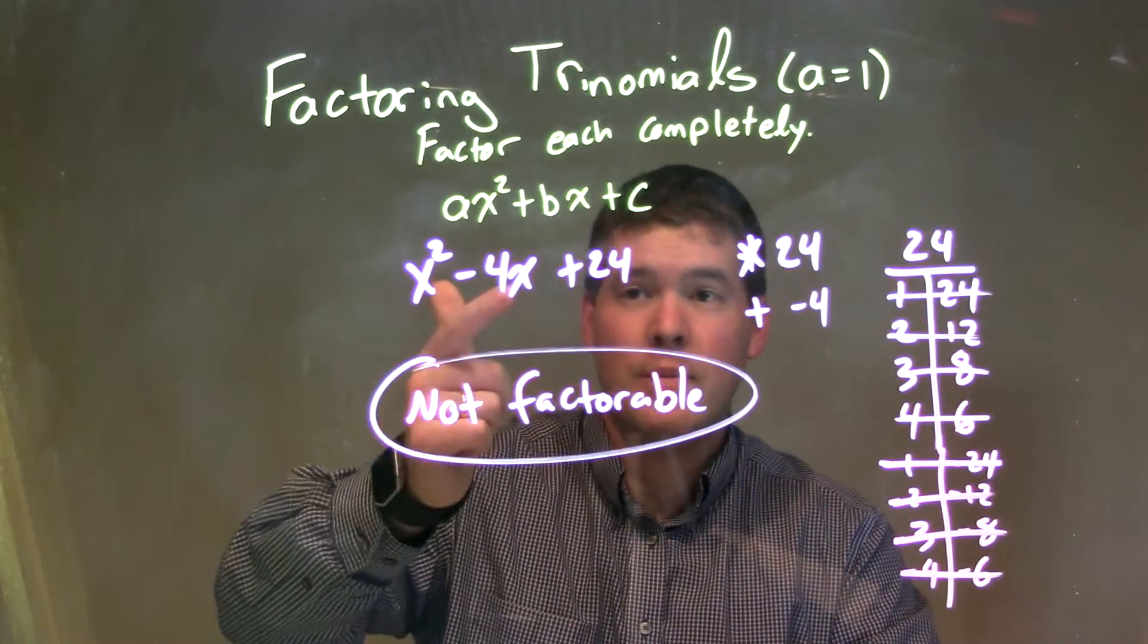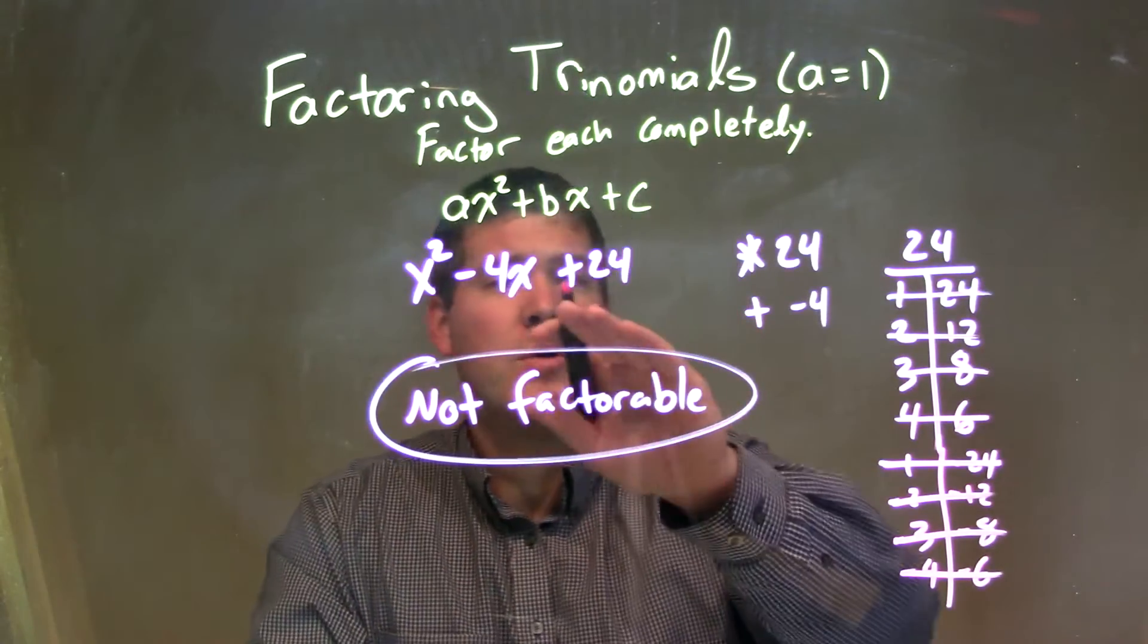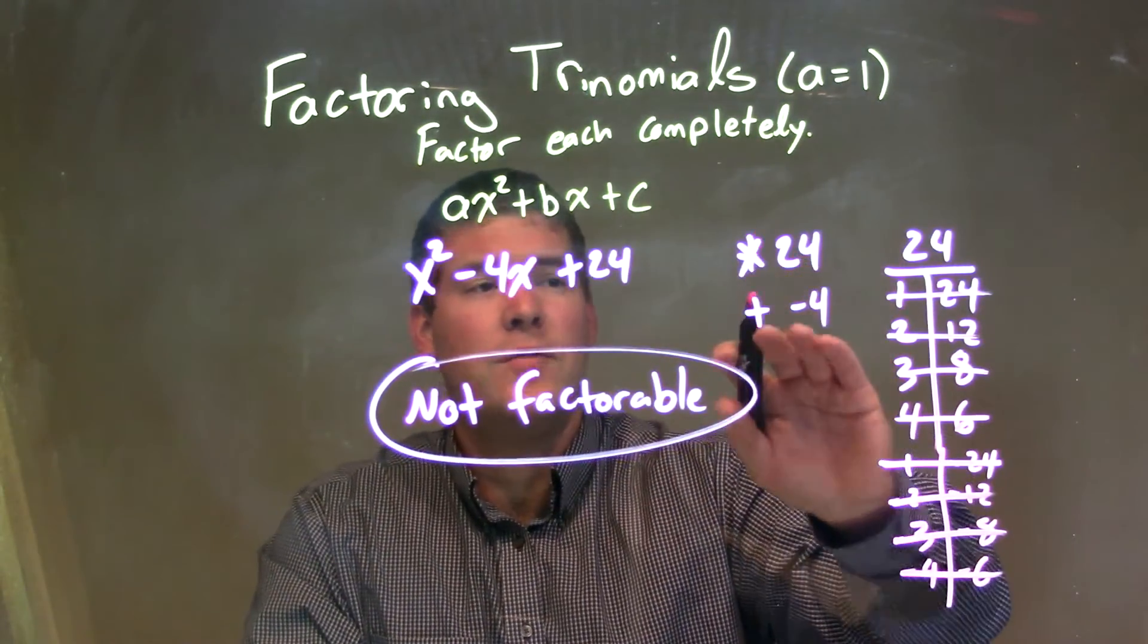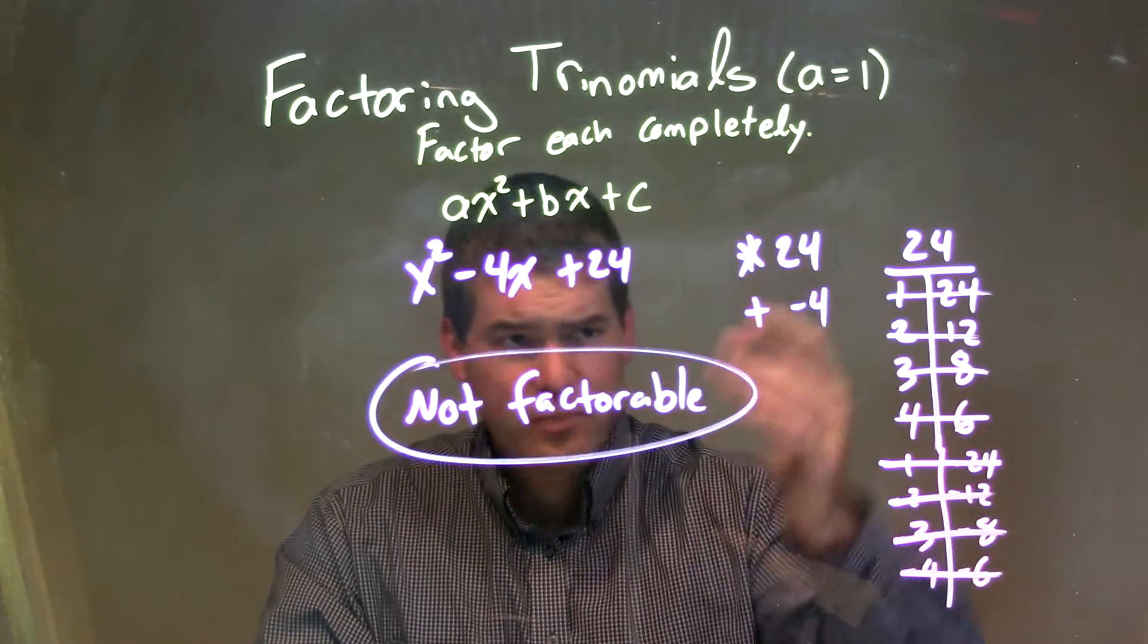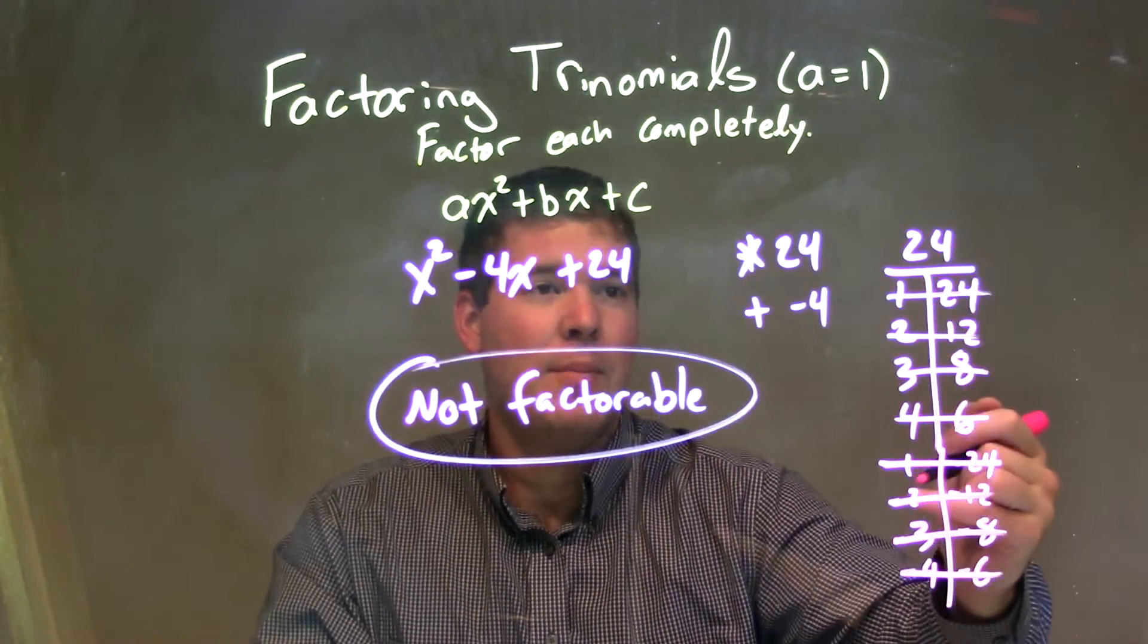So let's recap. We're given x squared minus 4x plus 24, and we need to factor that. So my whole goal here was that two numbers multiply to be 24 that add to be a negative 4. I was spending all my time with that.